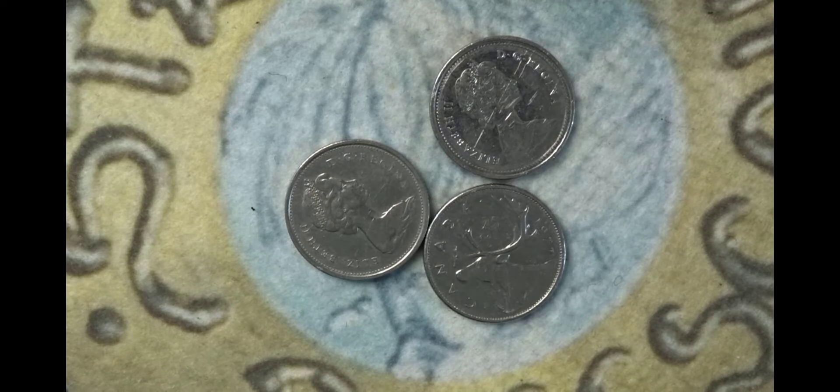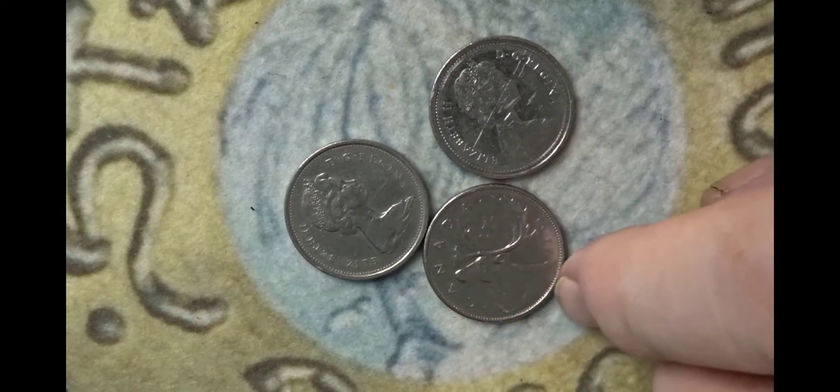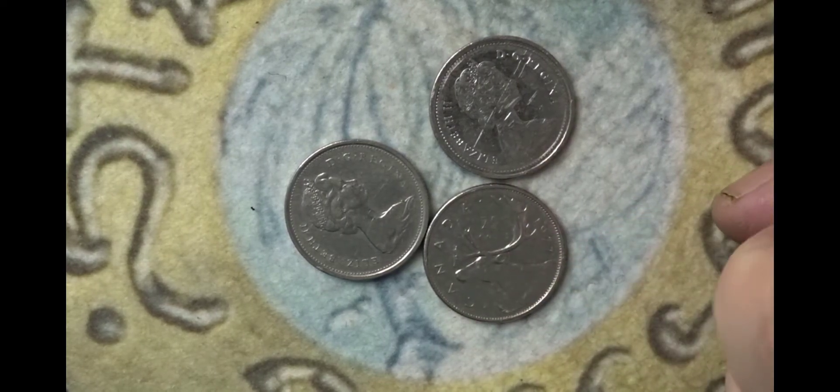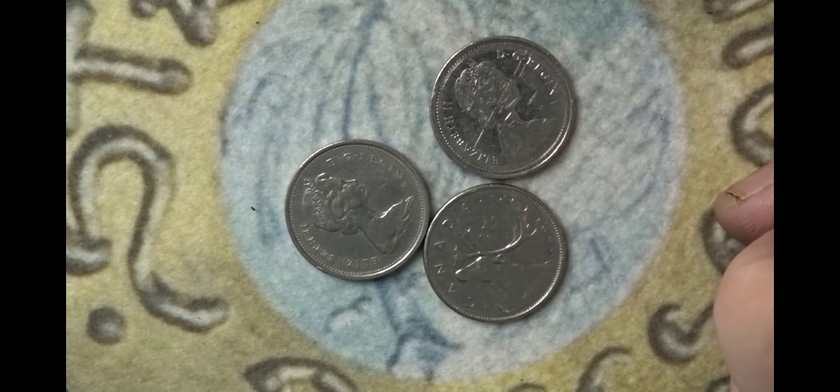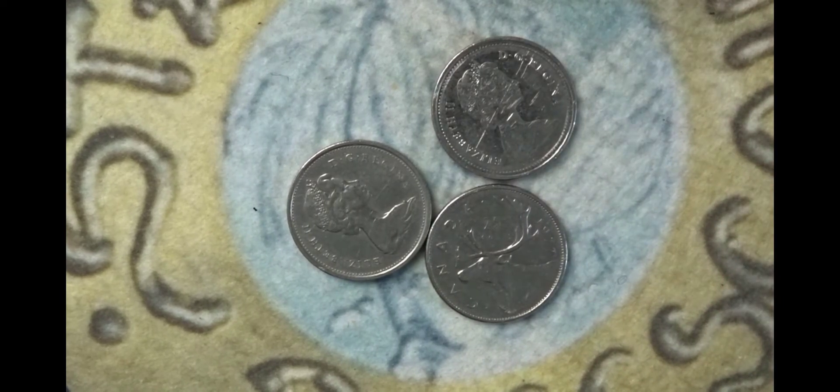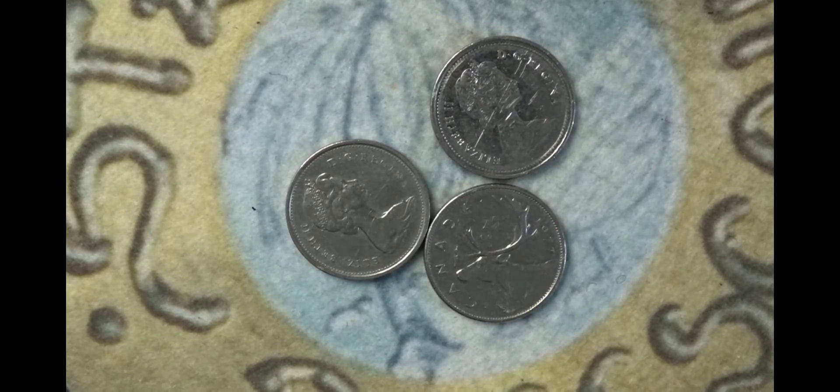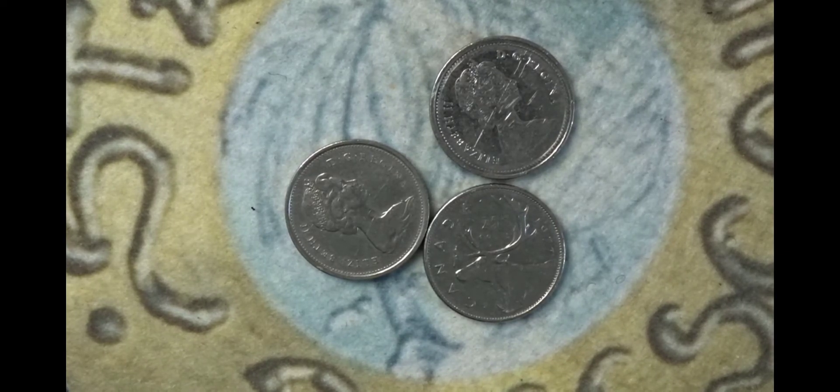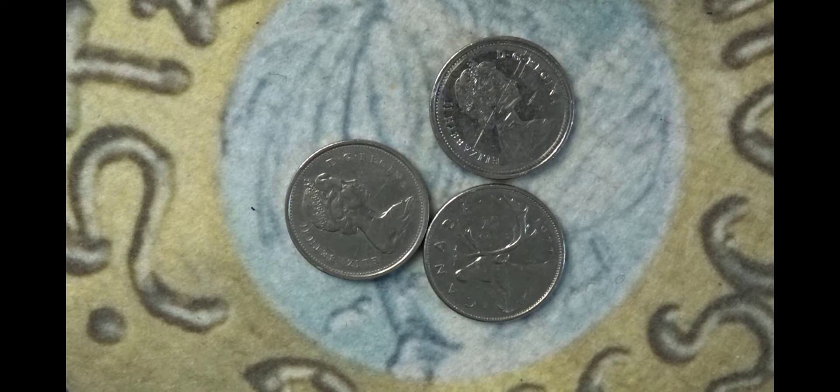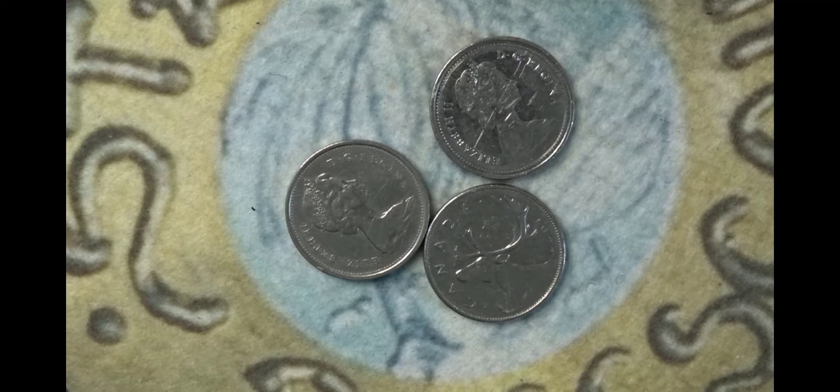On the rear, like this one, you have the caribou. The 1975 coin has a mintage of 141 million 148,000. The 1977 coin has a mintage of 99 million 634,555.